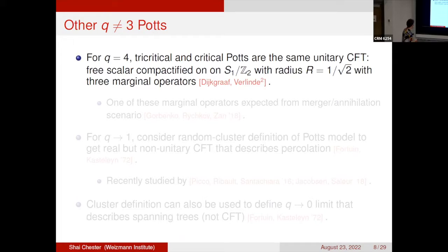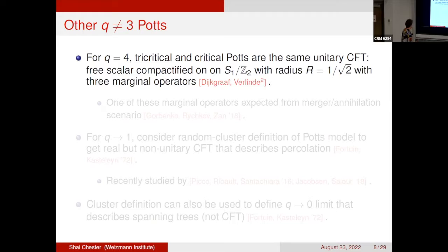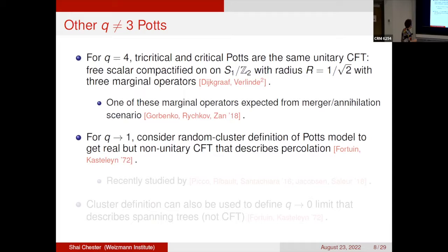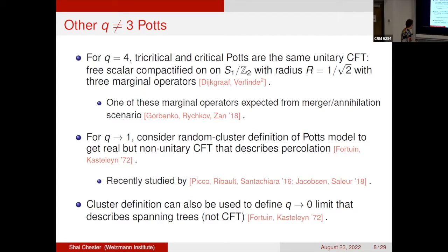For q equals 4, in two dimensions the tricritical and critical Potts are actually the same unitary CFT — the free scalar compactified on S1 mod Z2 with radius r equals 1/2 — which has three marginal operators, one of which is expected from the merger and annihilation scenario. For q going to 1, using the random cluster definition of the Potts model allows real values of q; the resulting CFT is non-unitary but useful for describing percolation. For q going to 0, the model describes something called the spanning tree, which is not a CFT but remains of interest to statistical physicists.